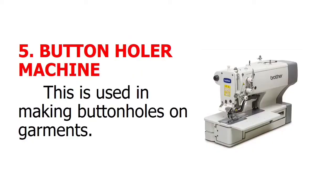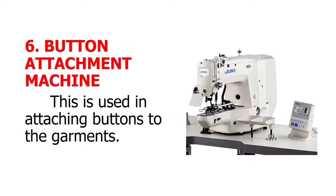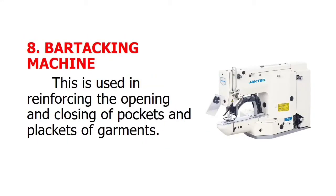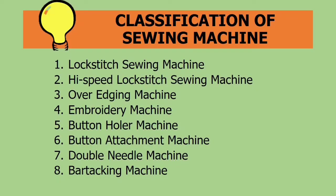Button-holer machine: this is used in making buttonholes on garments. Button-attachment machine: this is used in attaching buttons to garments. Double-needle machine: this is used in the construction of different kinds of clothing, especially for the in-seam, out-seam, and side-seam. And lastly, the bar-tacking machine: this is used in reinforcing the opening and closing of pockets and waistbands of garments. Once again, the different classifications of sewing machine based on machine type are lock-stitch, high-speed lock-stitch, over-edging, embroidery, button-holer, button-attachment, double-needle, and bar-tacking machine.